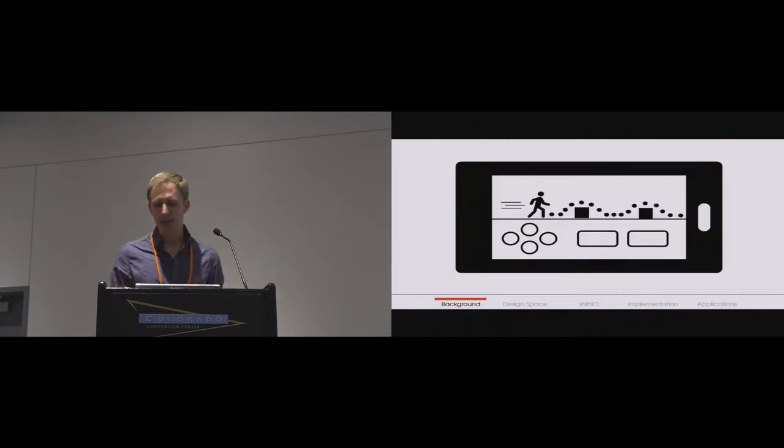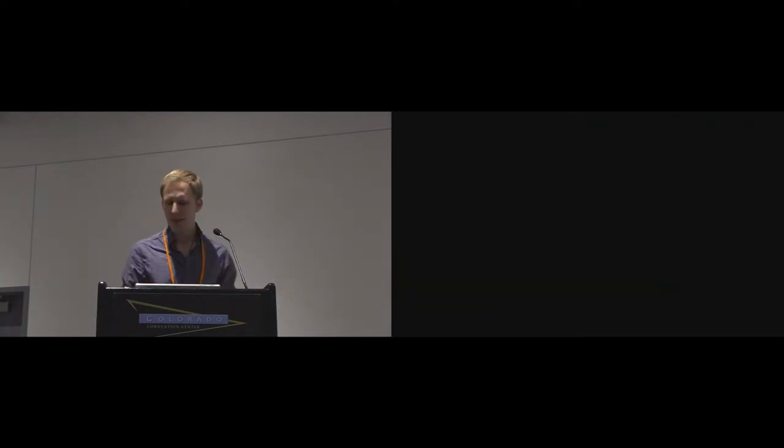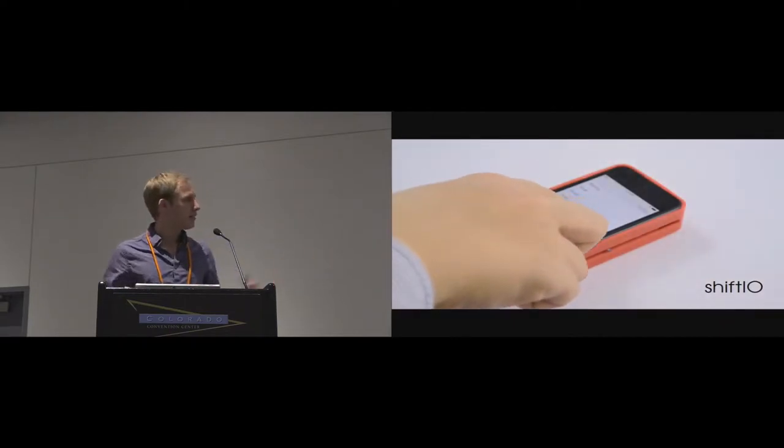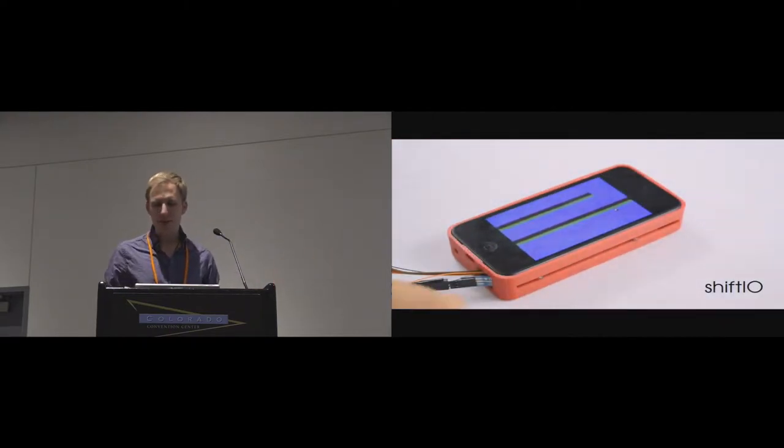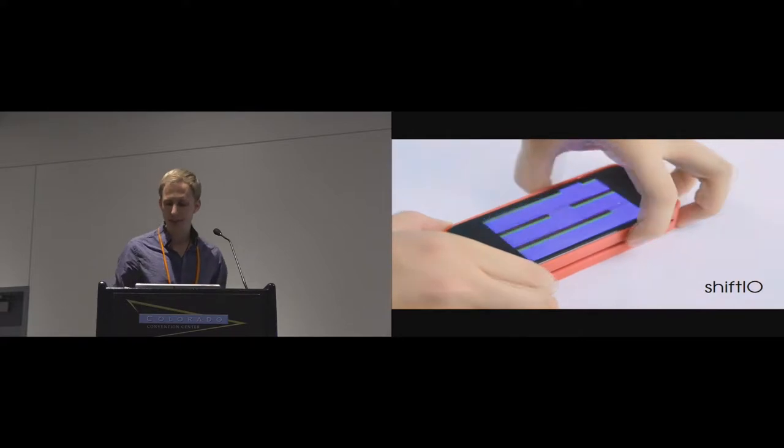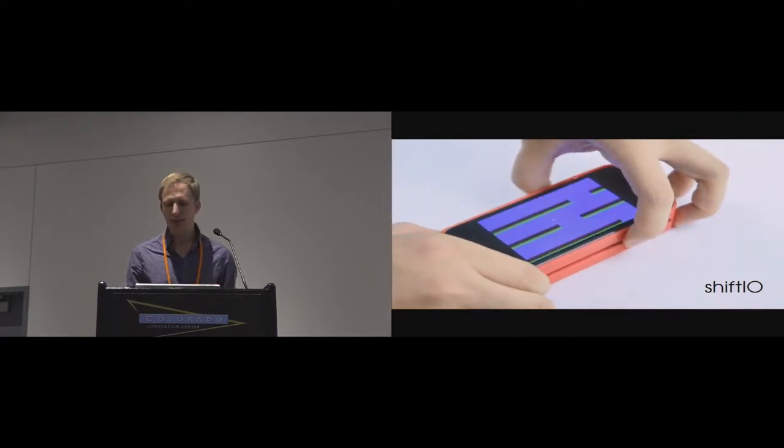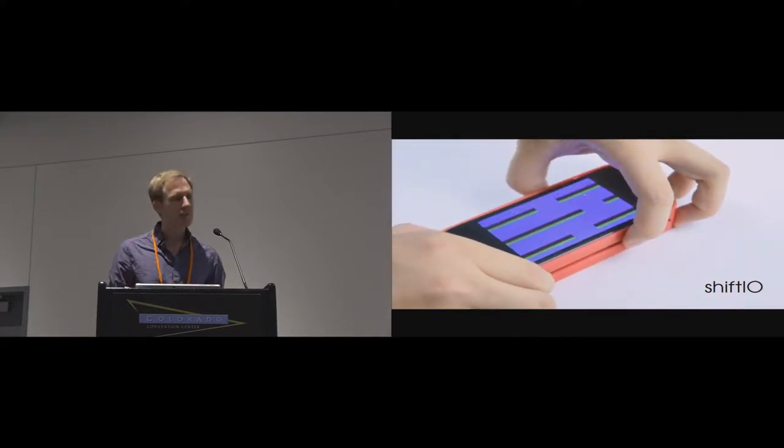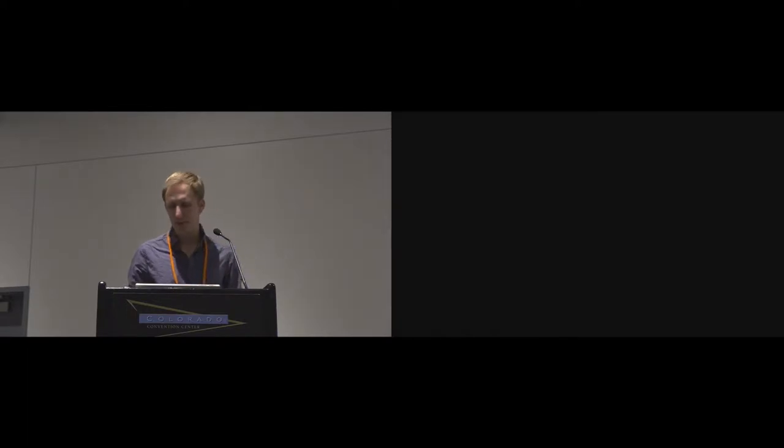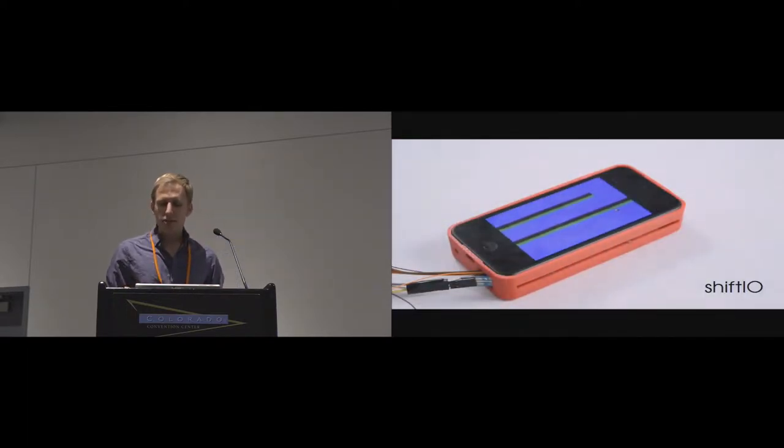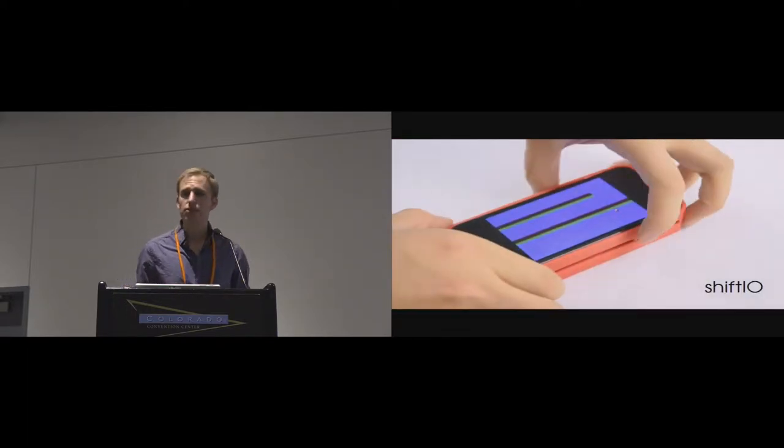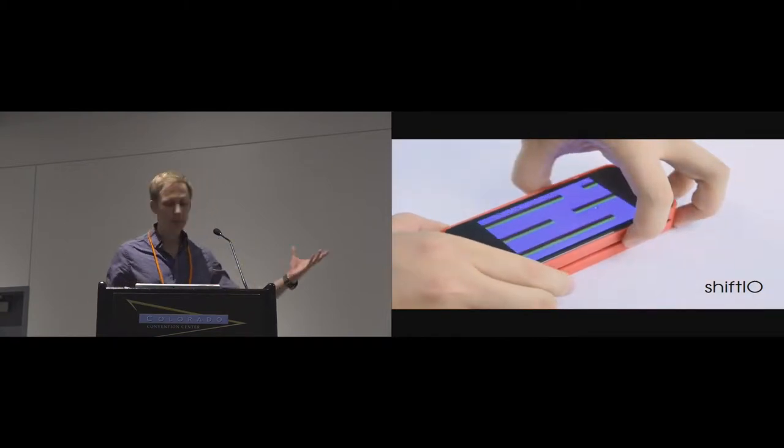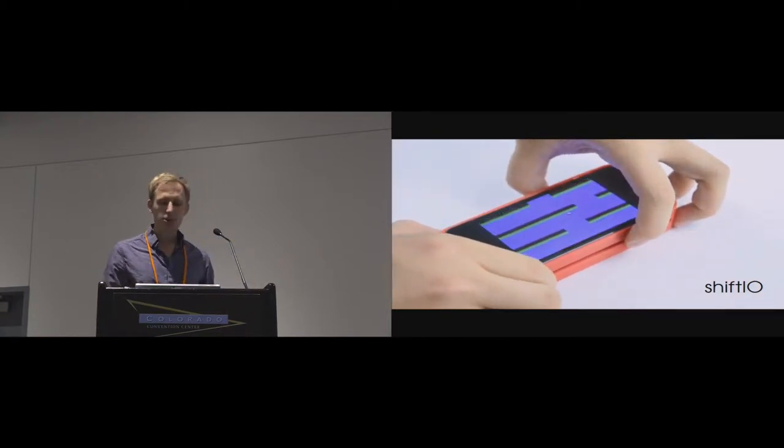For example, when I play a game on my mobile device, the phone is probably not configured with the buttons that I need to control my character. So instead, I tap virtual buttons on the screen. The prototype you see here is called ShiftIO. In this clip, the user opens a game application on a mobile device, and in response, the device configures these two touch responsive buttons to be used as the physical control. In contrast to conventional on-screen controls, these buttons provide better feedback, they free up screen space for the game, and they reduce occlusion.